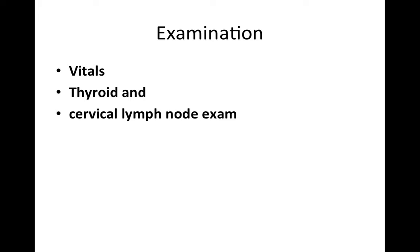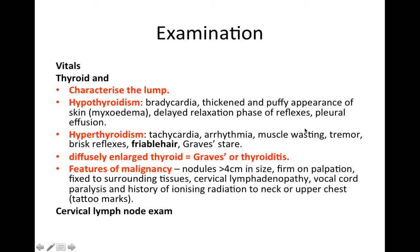In terms of examination, look at vitals, the thyroid, and perform a cervical lymph node exam. In vitals, look for tachycardia suggestive of hyperthyroidism and arrhythmias — such as ventricular tachycardia, atrial fibrillation, or supraventricular tachycardias — which can also be caused by hyperthyroidism. For the thyroid exam, characterise the lump and assess for hypothyroidism signs such as myxoedema, delayed relaxation of reflexes, and pleural effusions.